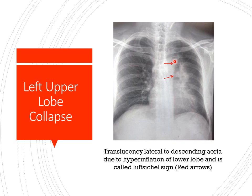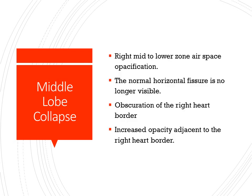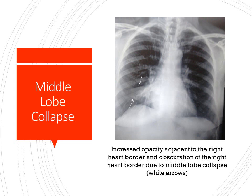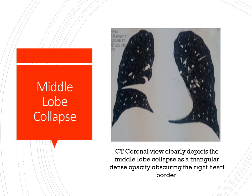Middle lobe collapse on the right side shows a right mid or lower zone airspace opacity. The normal horizontal fissure is no longer visible. There is obscuration of the right heart border and increased opacity adjacent to the right heart border. You can see the triangular shaped collapse of the middle lobe with the medial border of the heart in the lower part obscured, and crowding of vessels within the collapsed segment. The CT coronal view clearly shows the triangular shadow due to middle lobe collapse, reduced in size to become a small triangular shadow obscuring the right cardiac border.